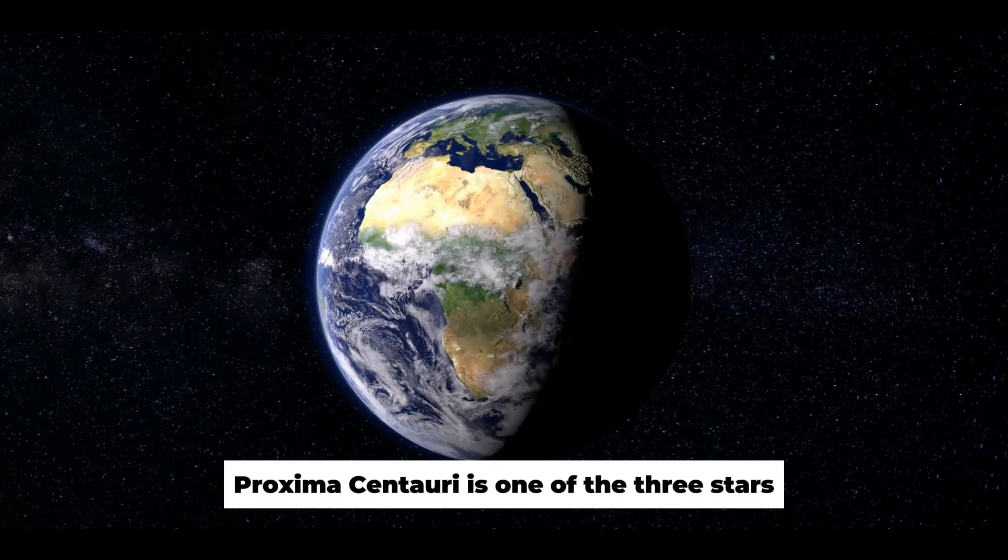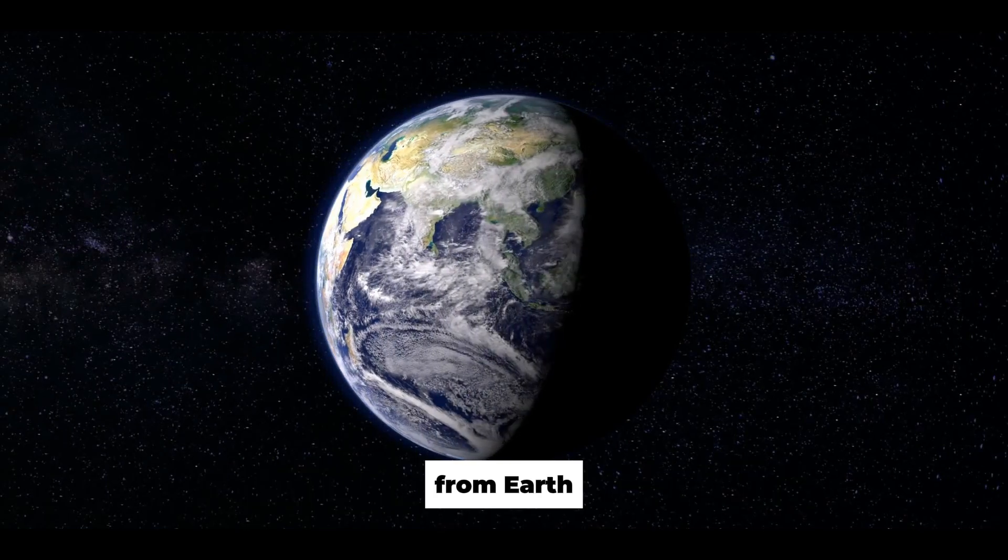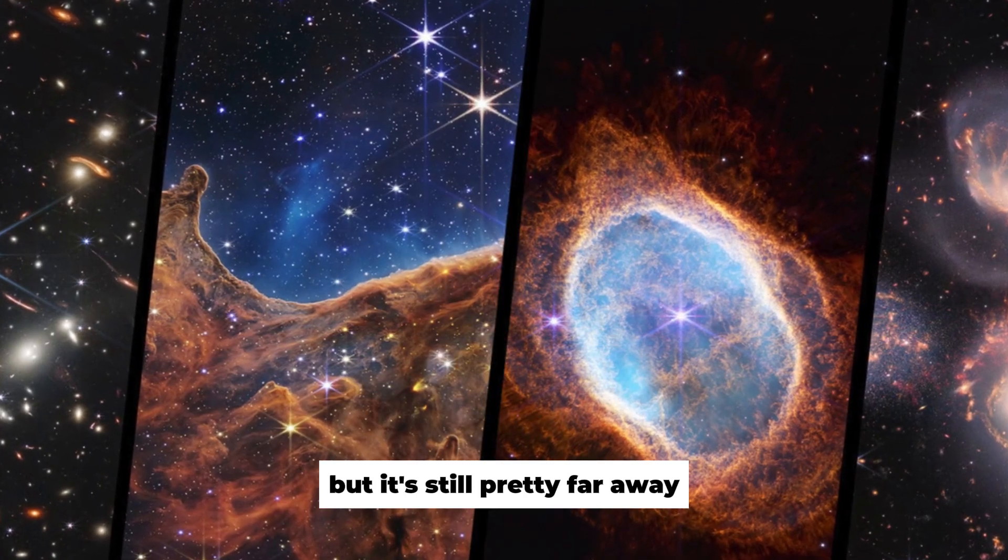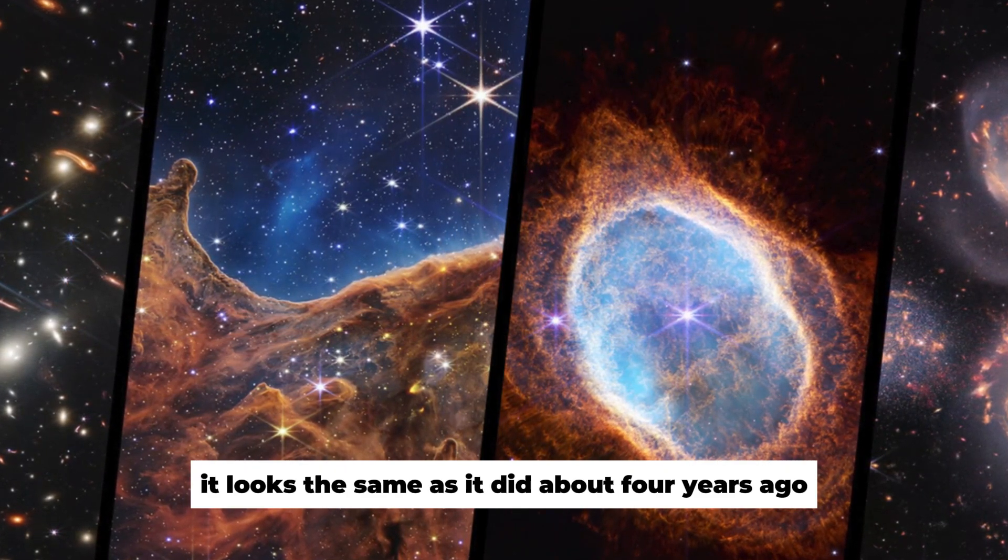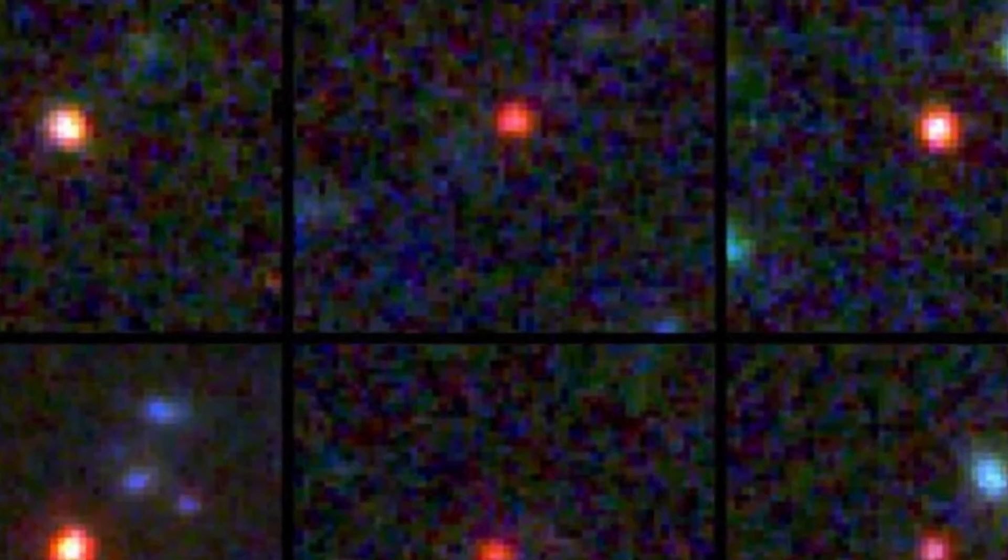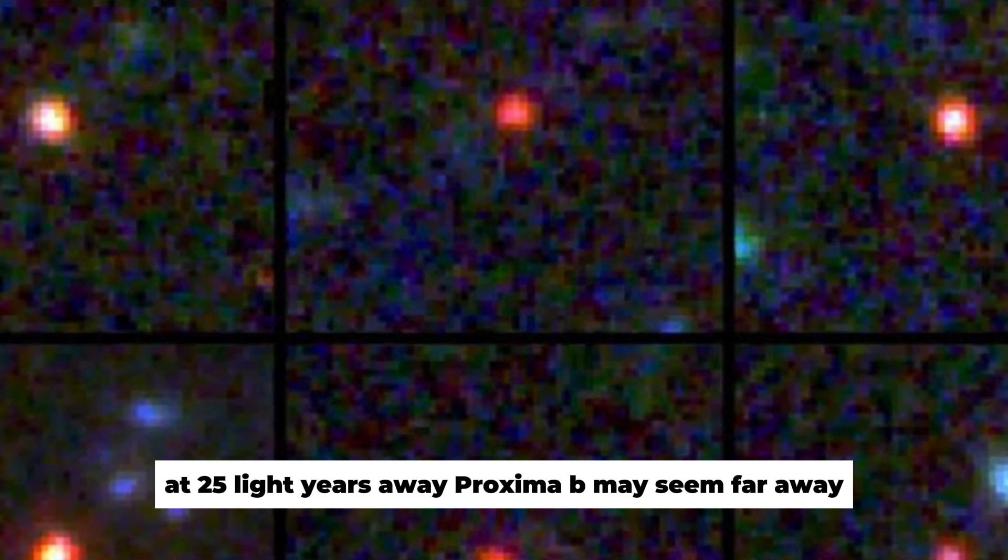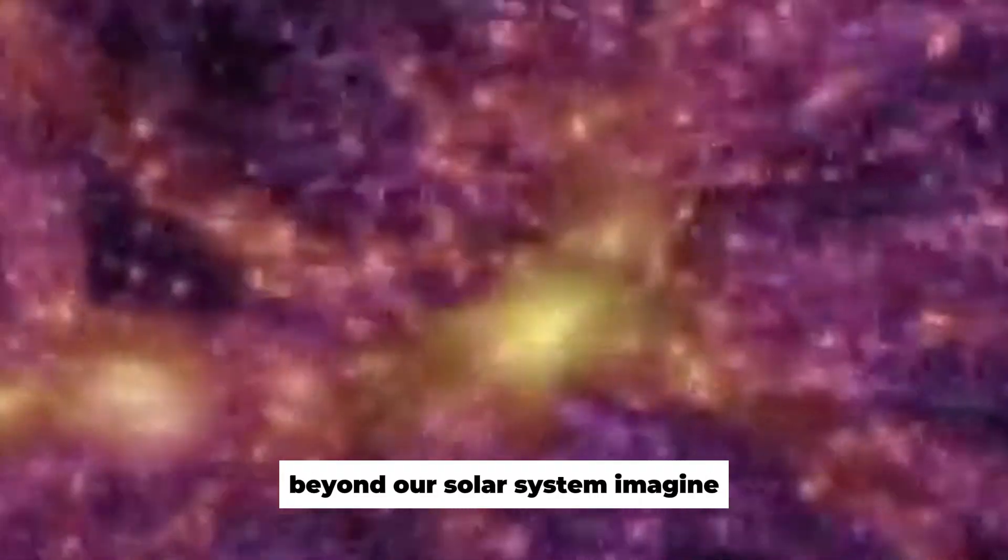Proxima Centauri is one of the three stars in Alpha Centauri. It is only four light-years away from Earth. Proxima is the star that is closest to our Sun, but it's still pretty far away. When we look at it, it looks the same as it did about four years ago. At 25 light-years away, Proxima b may seem far away, but it is actually one of our nearest friends beyond our solar system.